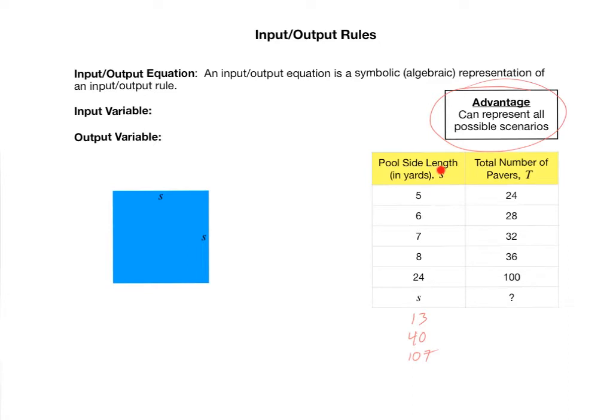You notice for poolside length in yards, I let lowercase s represent the poolside length in yards. So s could be 5, 6, 7, 8, 24, 13, 40, 107, any possible legitimate number for the side length of the pool. So s is our input variable. And our output variable, I chose to use capital T to represent that, since it's the total number of pavers.